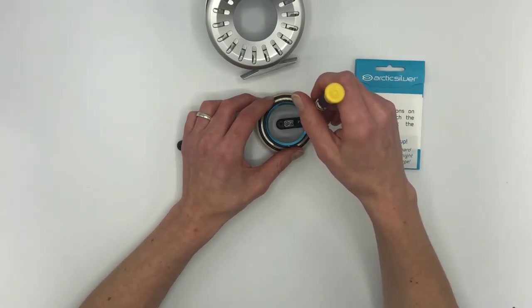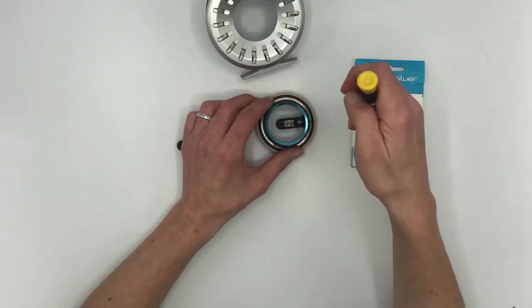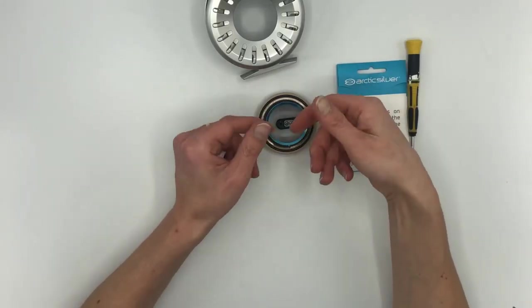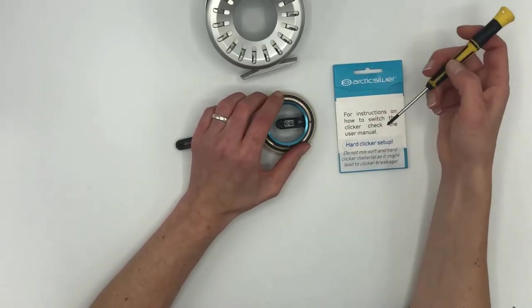If you only want to change the retriever direction from right to left, you only have to take out these two screws, take out the clicker guide, turn it around, fasten it again, and you have changed the retriever direction.